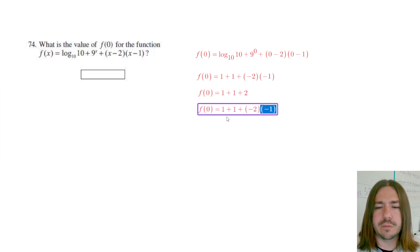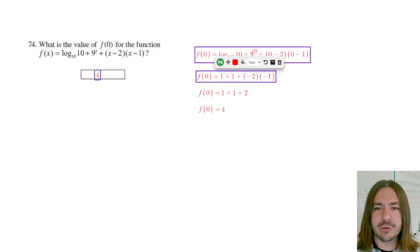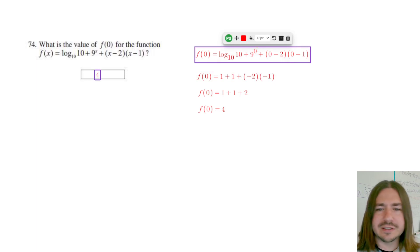That's 4, so our answer here is 4. Again, use the calculator. There's no reason why you need to risk messing up the order of operations and forgetting a negative, or not knowing that 9 to the 0 is 1.